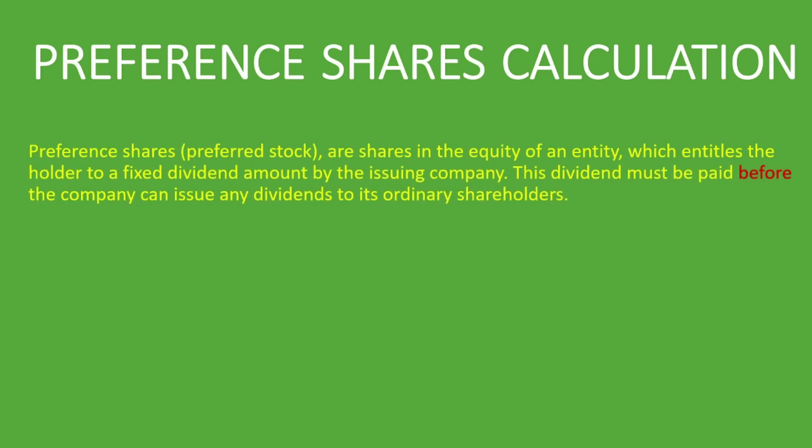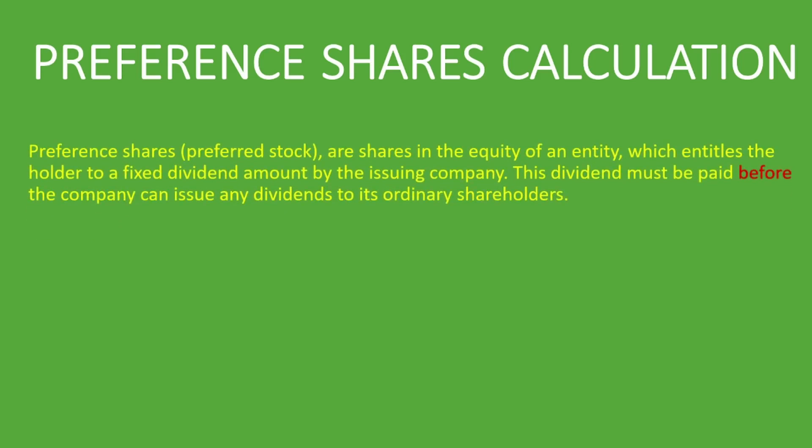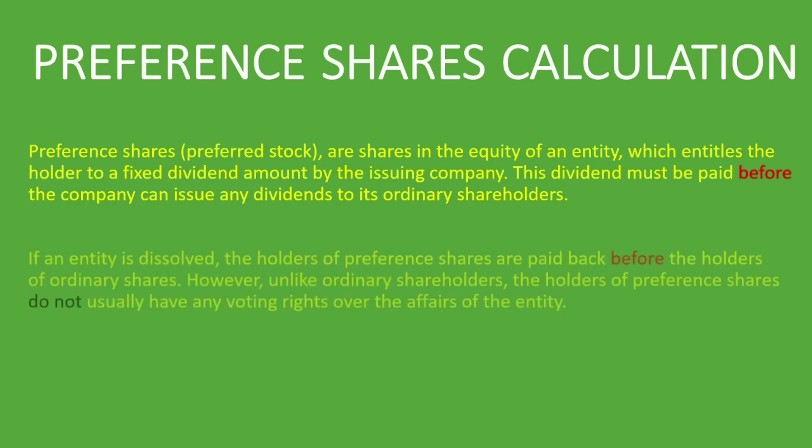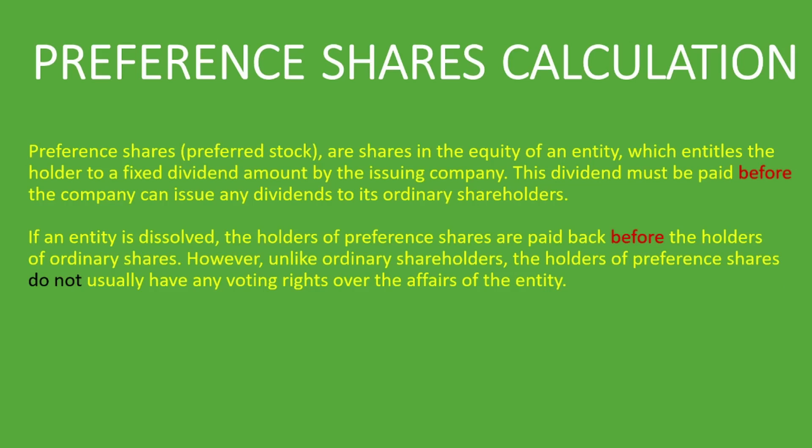What are preference shares? Preference shares, otherwise known as preferred stock, are shares in the equity of an entity which entitle the holder to a fixed dividend amount paid by the issuing company. This dividend must be paid before the company can issue any dividends to its ordinary shareholders. If an entity is dissolved, the holders of preference shares are paid back before the holders of ordinary shares.